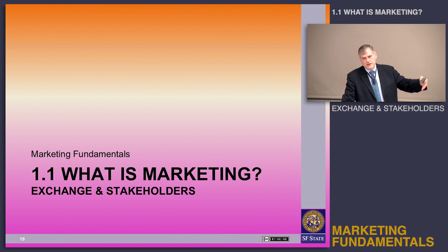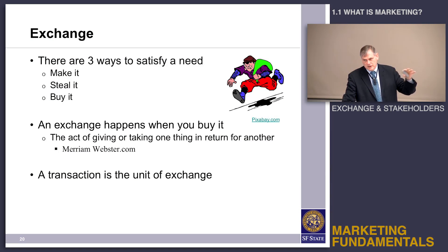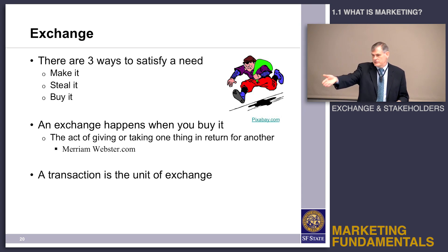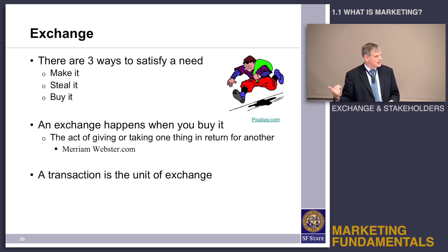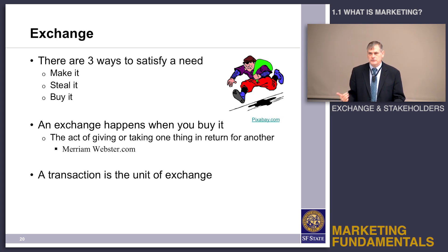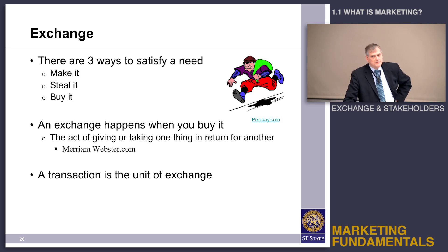We've talked about what value is, the idea of benefit, and the kinds of utility that we create. We had talked in our naive definition about it being all about buying and selling stuff. So in order to buy and sell stuff you need to make an exchange. Basically, if you have a need there are three ways to satisfy it: you can make it yourself, you can steal it, or you can buy it.